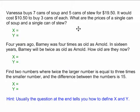In the first example, Vanessa buys seven cans of soup and five cans of stew for $19.50. It would cost $10.50 to buy three cans of each. What are the prices of a single can of soup and a single can of stew? As you can see down here in blue, the hint is usually the question at the end tells you how to define x and y.